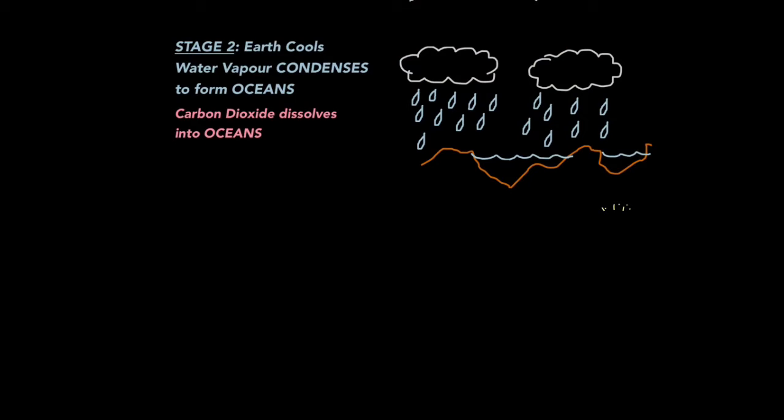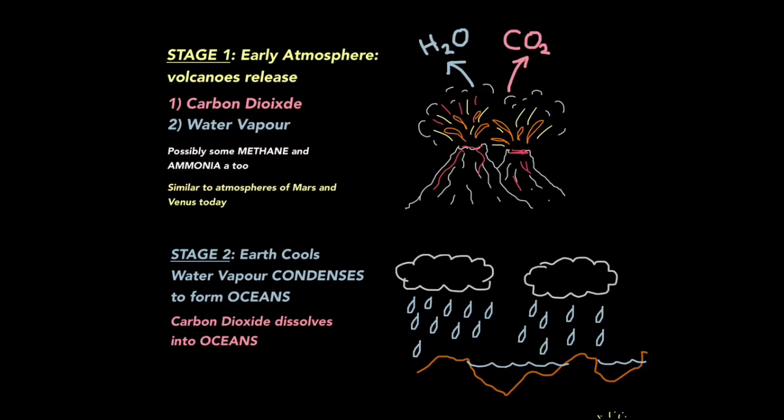Secondly, the earth started to cool. The water vapour turned from a gas to a liquid. That's what we mean by condensed or condenses to form the oceans. So if you remember I was talking about that comet earlier, that comet basically boiled under the ground and erupted through volcanoes.